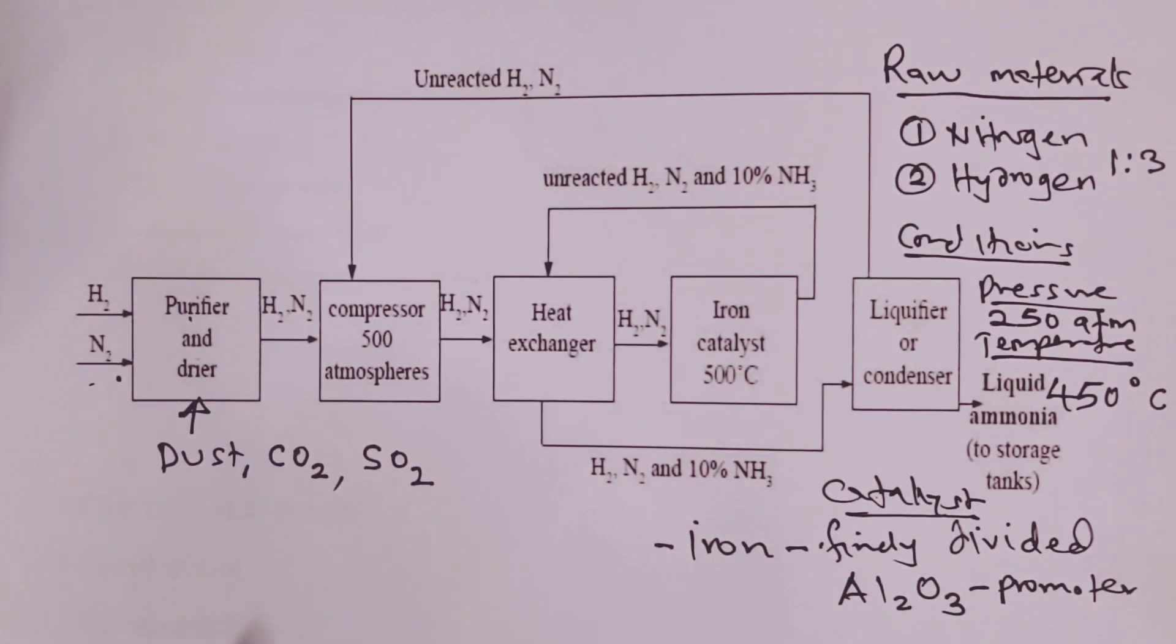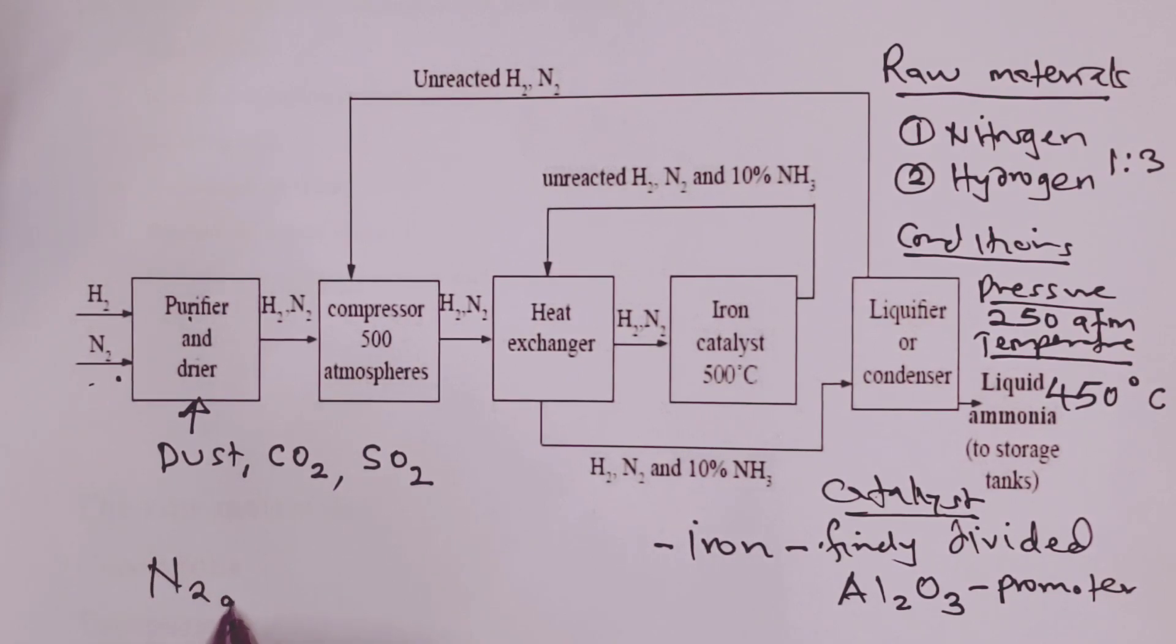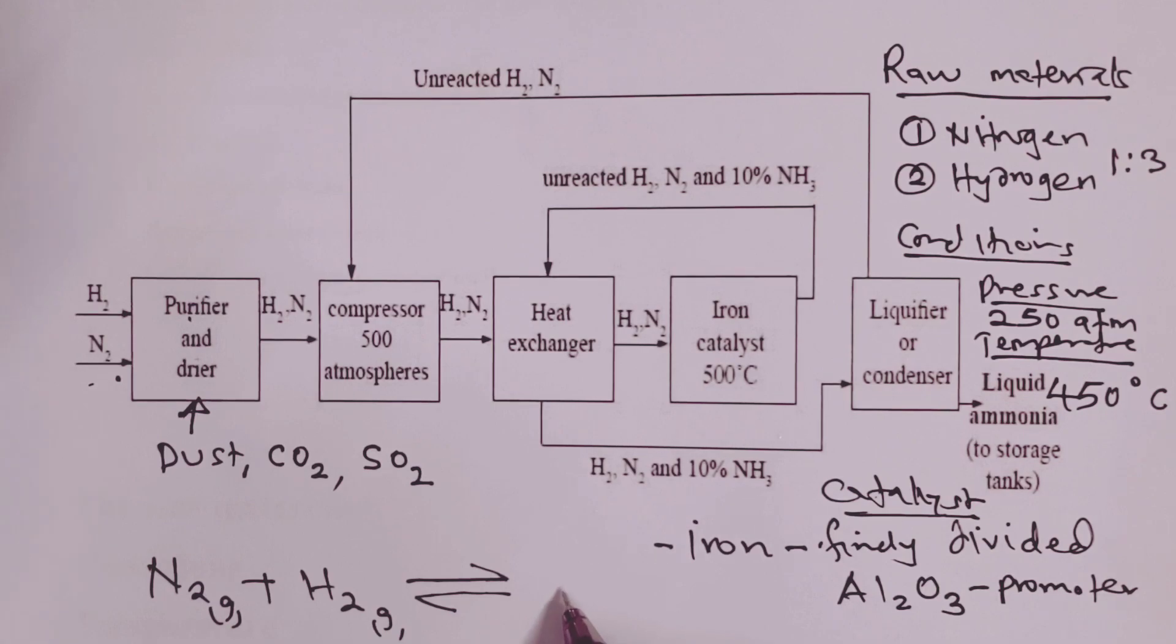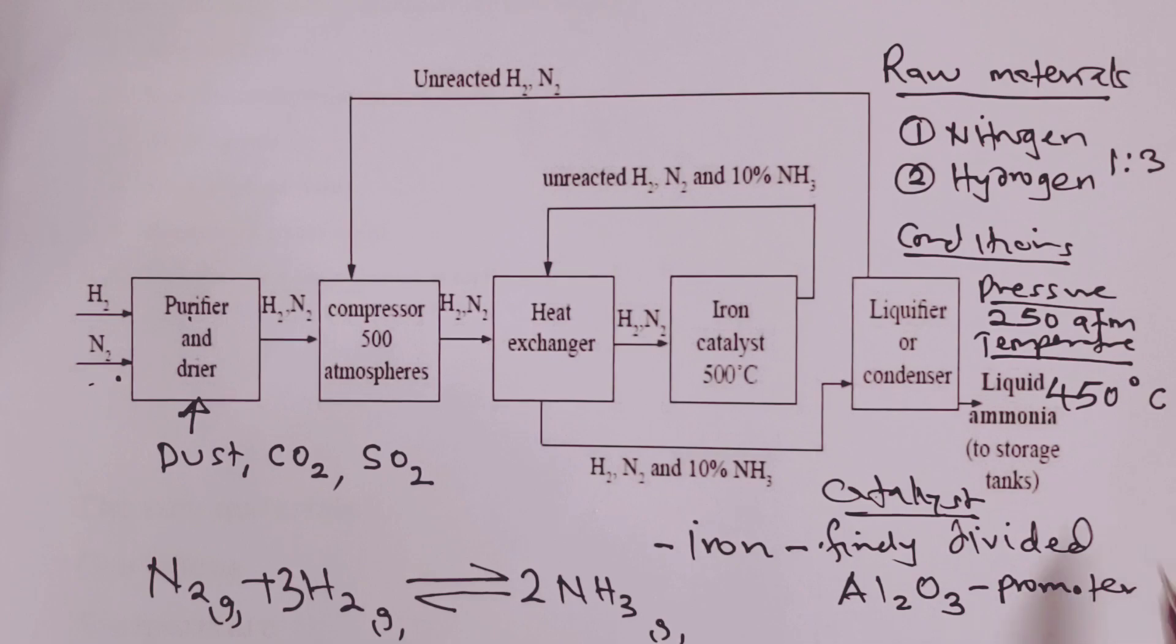In the catalytic chamber, nitrogen reacts with hydrogen, of course reversibly, and we are able to get ammonia. Of course, we shall balance with a 2 on ammonia and a 3 on hydrogen. So you can see here, every volume of nitrogen needs 3 volumes of hydrogen to produce 2 volumes of ammonia. And that's why we said the raw materials here must be supplied in the ratio 1 is to 3 for nitrogen to hydrogen ratio.